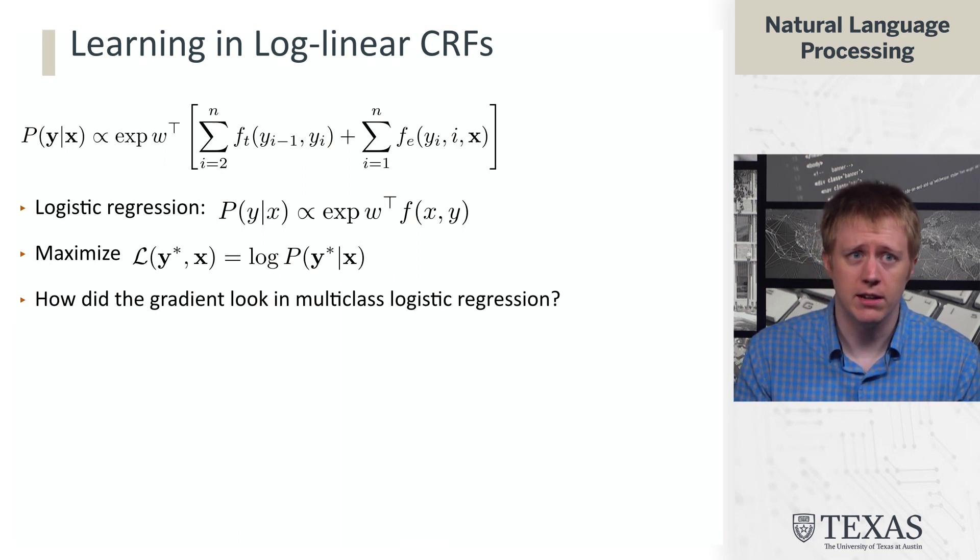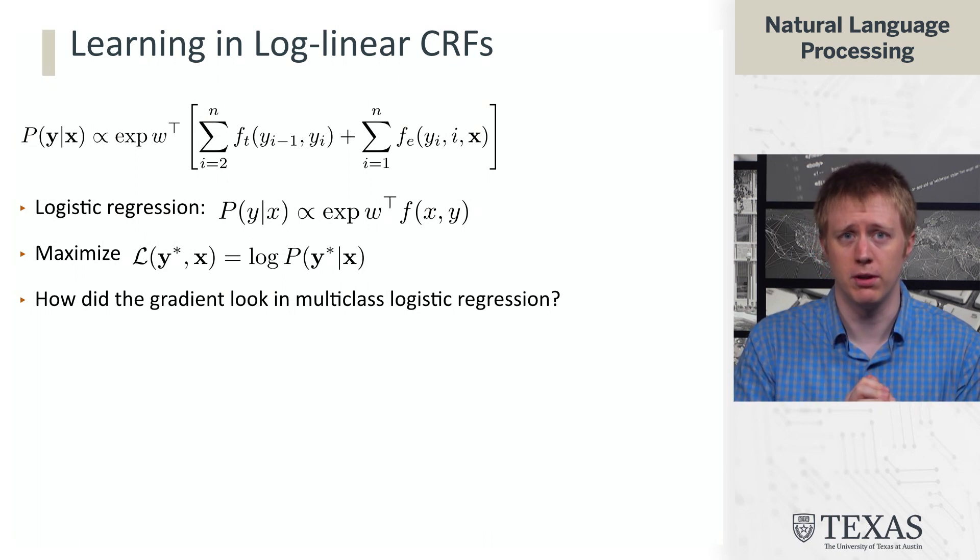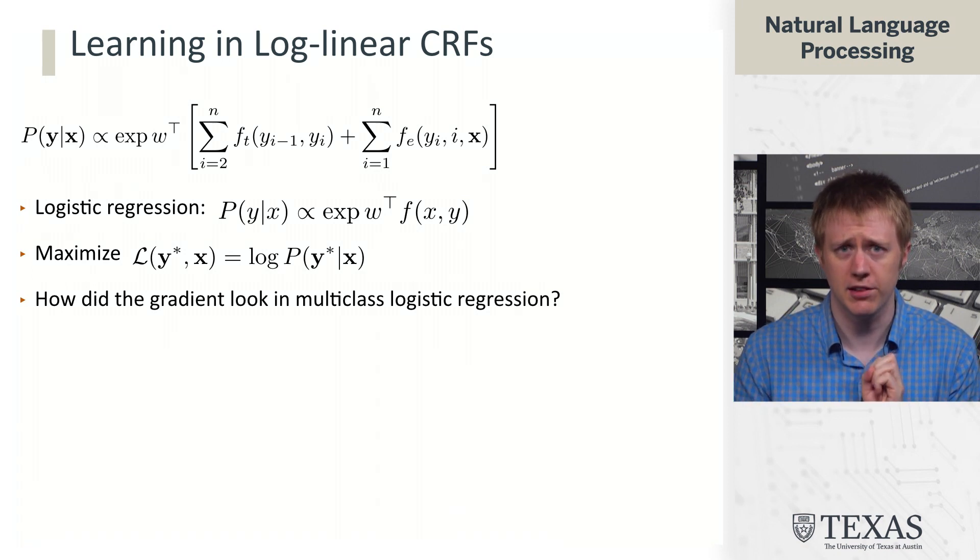So what we want to do is maximize likelihood of observed training data where we have instances X with labels Y star. And so that looks like maximizing this log probability. And so it's worth saying, in order to do this, suppose that we're going to use gradient descent, as we've been doing for most of our maximum likelihood settings. How did the gradient look for multiclass logistic regression?